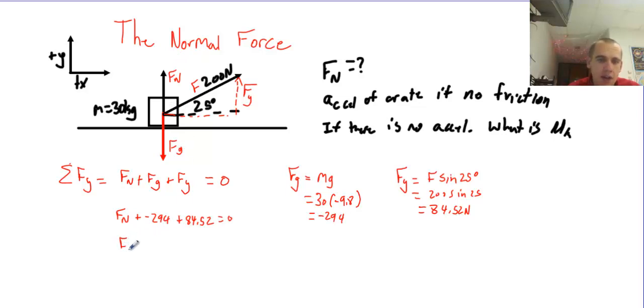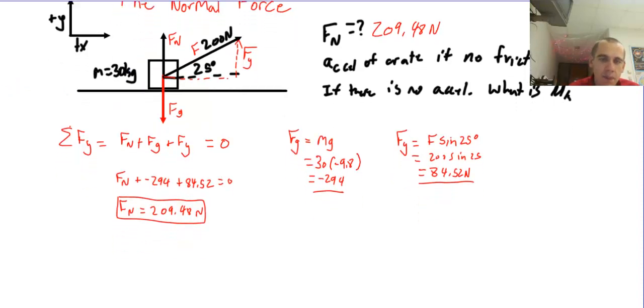And the reason it equals zero is because this thing is not accelerating in the y direction. So Fn equals, if I take that negative 294 plus 84.52, I get 209.48. And then I'm adding it to the other side, right? So 209.48 newtons. So this is the normal force. You'll notice it is not equal and opposite to the weight force. It's a little bit less than the weight force because the rope is actually supporting some of the weight. So I've answered this part of my question. The normal force is 209.48 newtons, and it is positive because it's in the positive y direction.